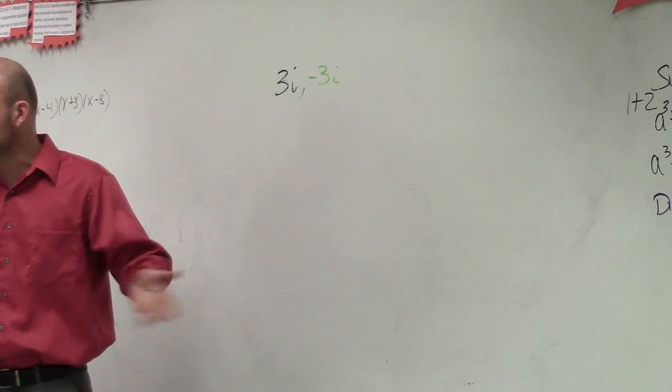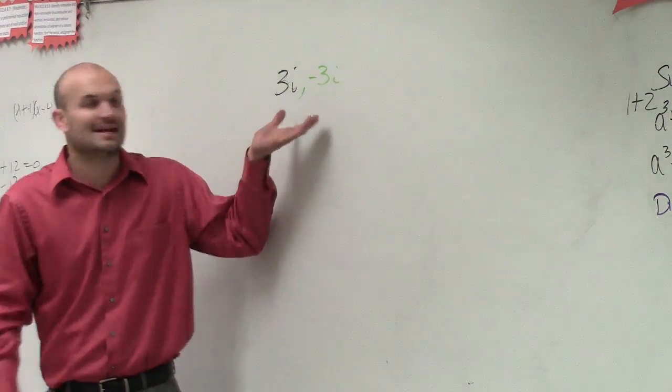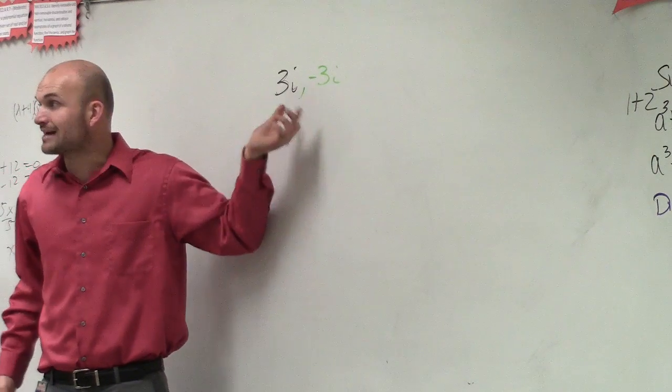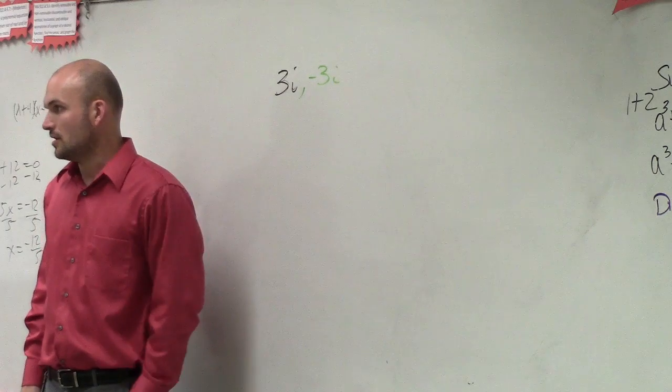Or if it was a binomial, you produced that conjugate. You just always need to make sure for any real number, whenever I'm giving you a zero, a complex zero, you have to produce the conjugate, alright?